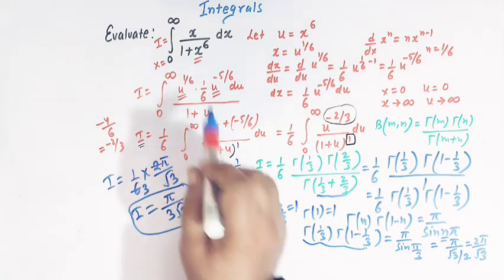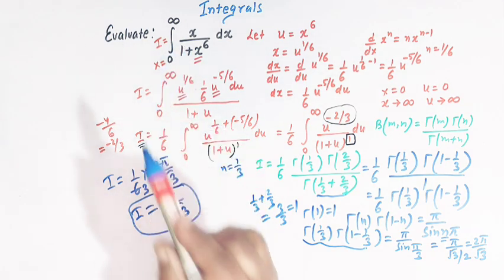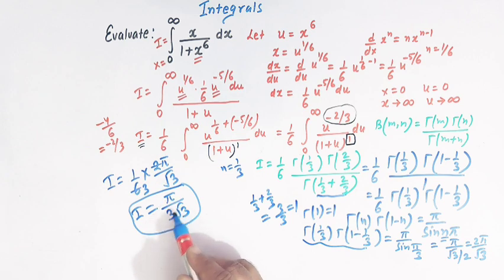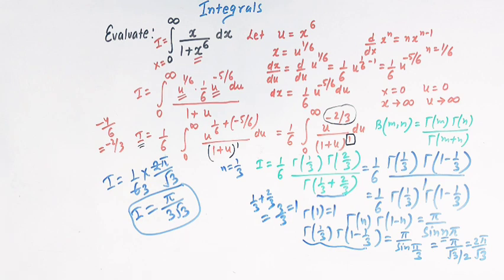So viewers, the value of this integral is given by pi divided by 3 times square root of 3. By the application of beta and gamma functions, we can solve these kinds of integrals.